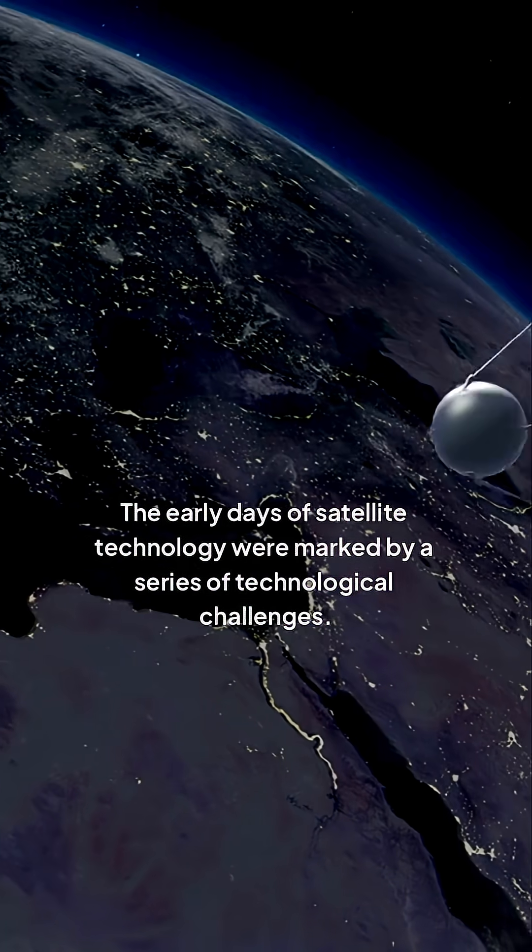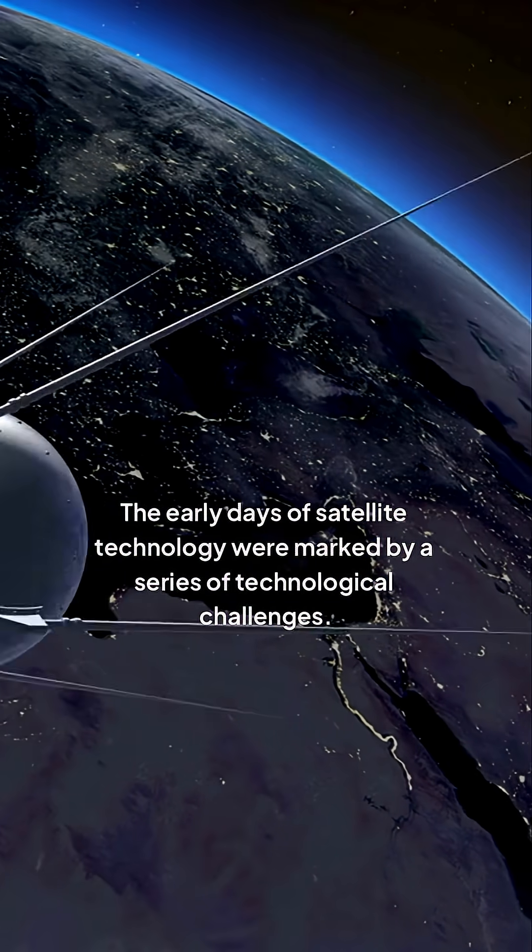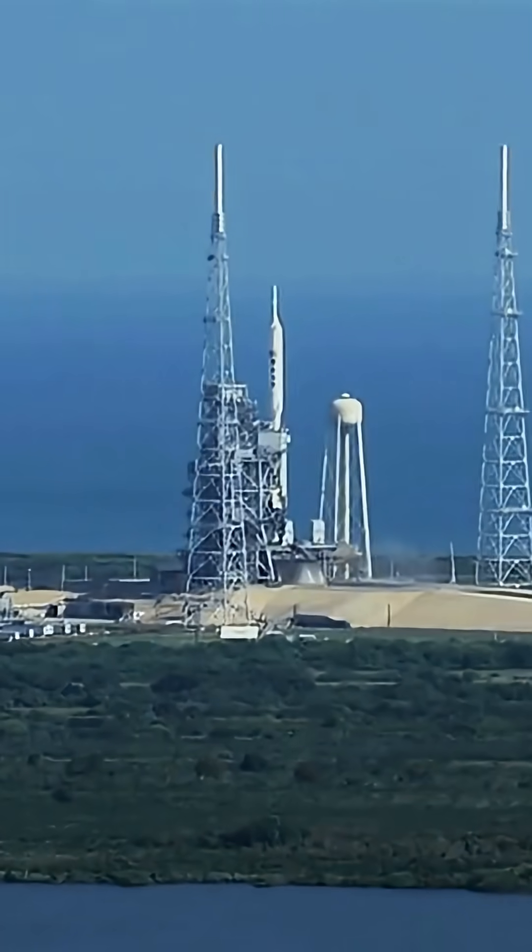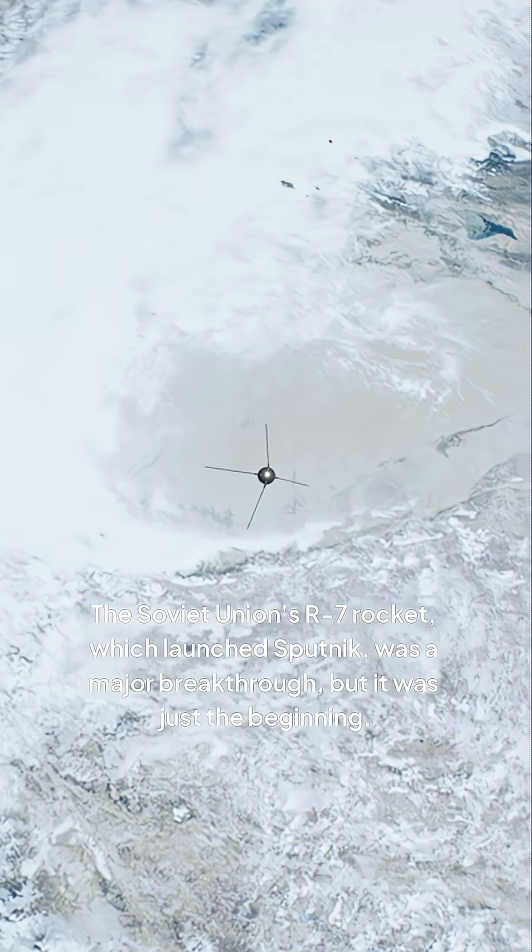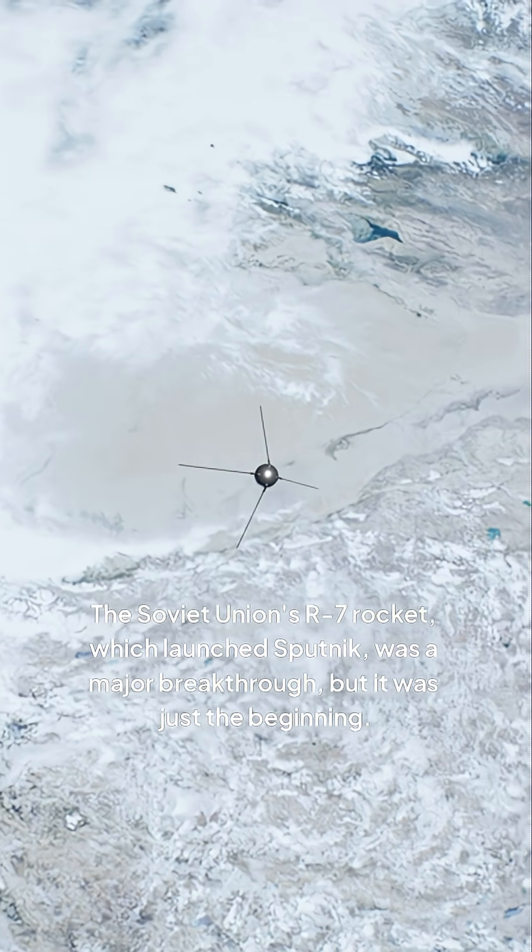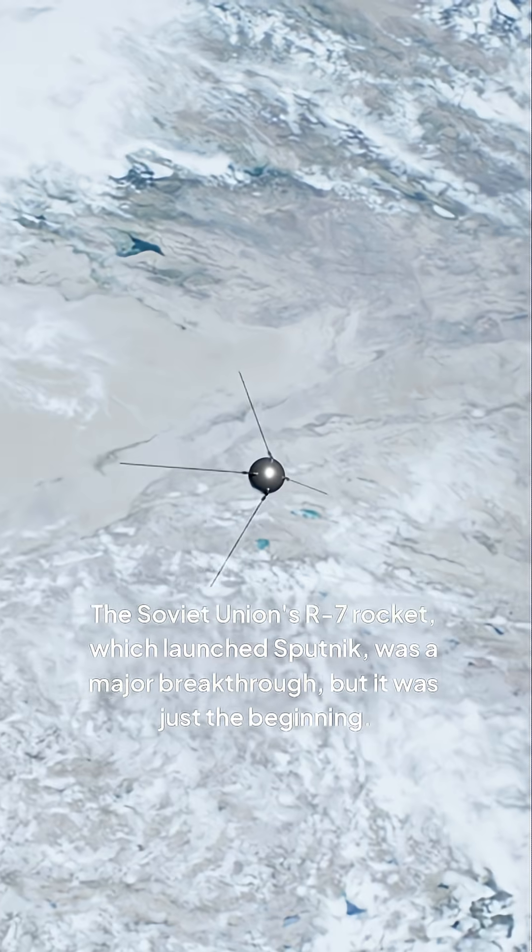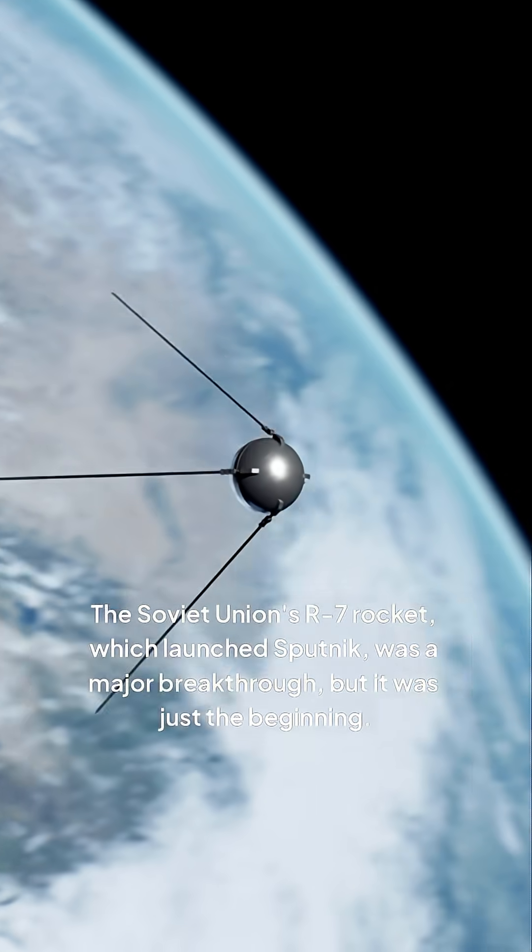The early days of satellite technology were marked by a series of technological challenges. One of the biggest hurdles was developing a reliable rocket system capable of reaching orbit. The Soviet Union's R-7 rocket, which launched Sputnik, was a major breakthrough, but it was just the beginning.